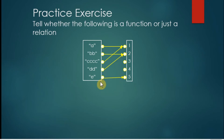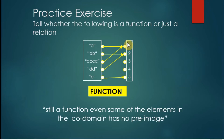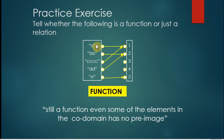For the next mapping, all elements have an image, passing the first condition. Checking the second condition, all of them have exactly one pair in the codomain — so this is a function. Note that this is still a function even though one element in the codomain has two or three pre-images. We focus only on the domain: all elements must have a pair, and each pair must be unique. We do not care if an element in the codomain is mapped from more than one element in the domain.